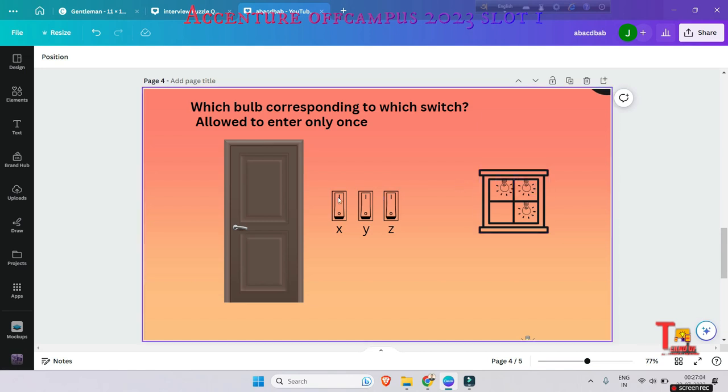Assume that the room is locked and there are three switches. Your task is to identify which bulb is corresponding to which switch. And the condition is you are allowed to enter the room only once. By entering the room only once you have to identify which bulb is corresponding to which switch. Think about the problem and come with a solution.